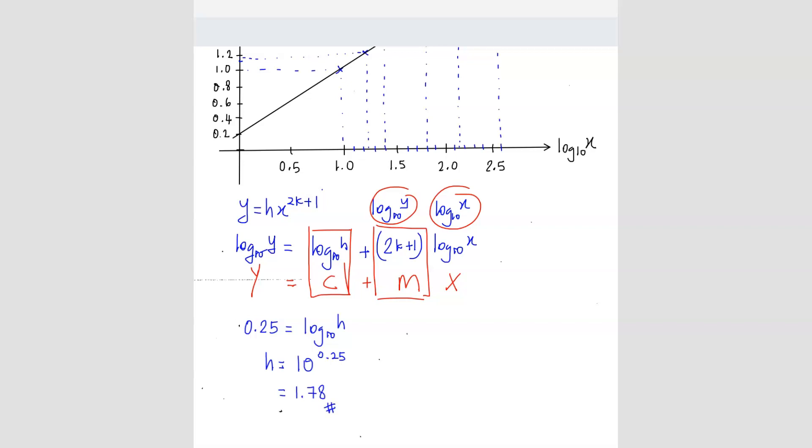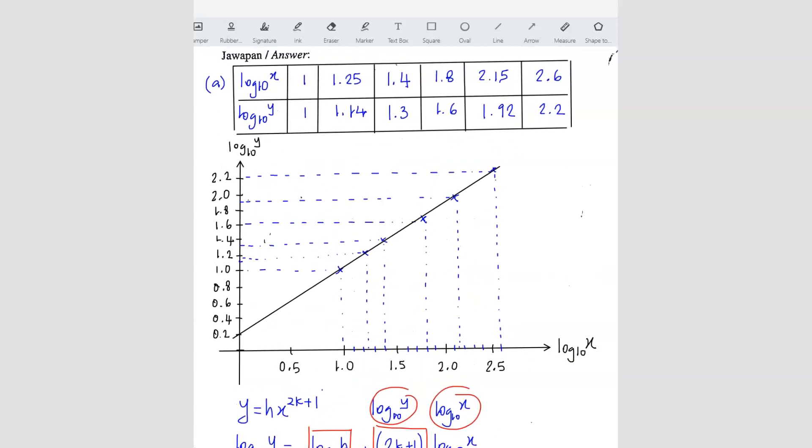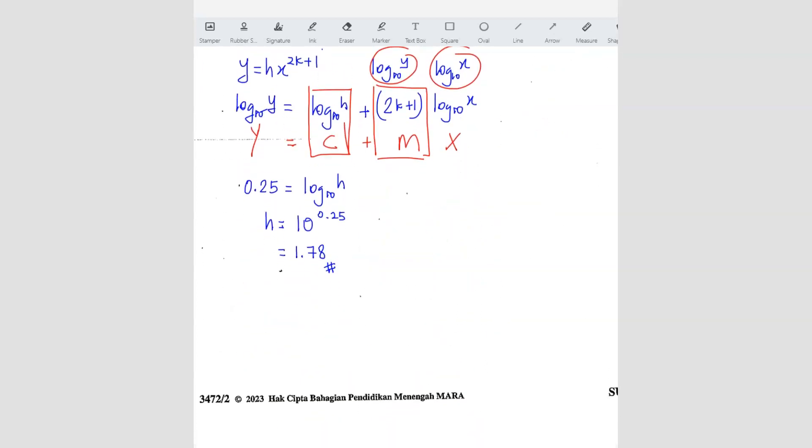Now we can do for m. So m is the gradient. So how to find a gradient? So we can use the graph to find your two points and then find the gradient. So in this case, what I'm going to use, since the first point and the last point is connected, I want to use this. I'm going to use this 2.6 and 2.2 and then 1.1. So let's see.